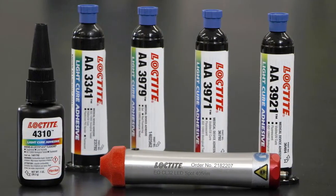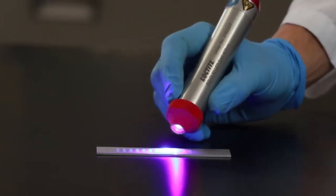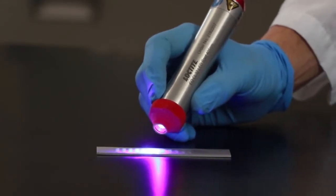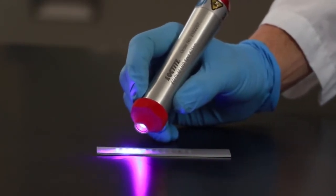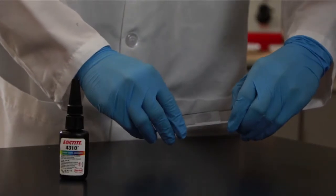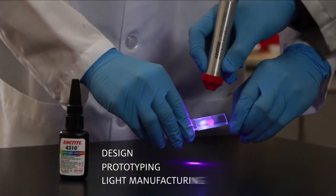The Loctite CL32 LED spot system directly meets this need, as its compact and ergonomic design is perfect for applications such as design, prototyping, and light manufacturing.